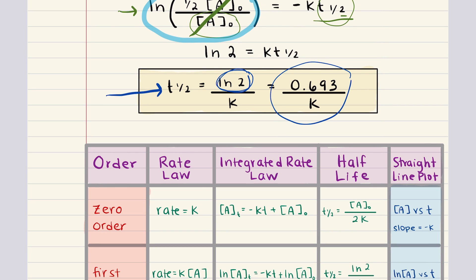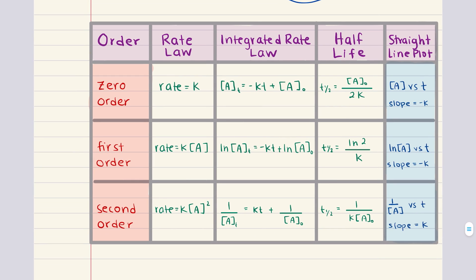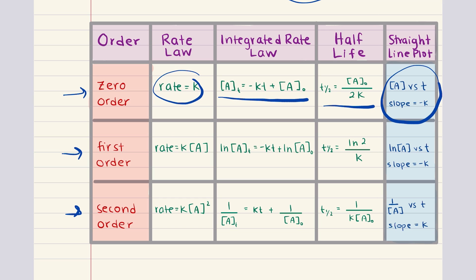This tells us that for a first-order reaction, the half-life is inversely proportional to the rate constant k. A larger rate constant means a shorter half-life and vice versa. Now, while we've focused on first-order reactions, it's important to note that rate laws, integrated rate laws, and half-lives vary depending on the order of the reaction. The table shown here summarizes this information for zero, first, and second-order reactions — including the rate law, integrated rate law, half-life expression, and the straight-line plot for each. For most general chemistry classes, you should commit this to memory, as it will be very useful in homework and exams.